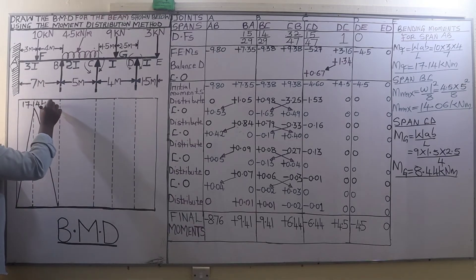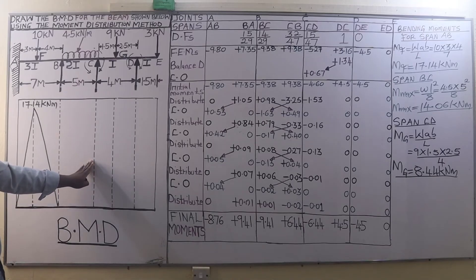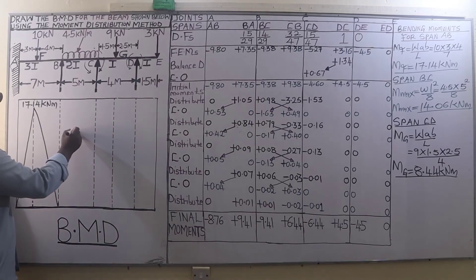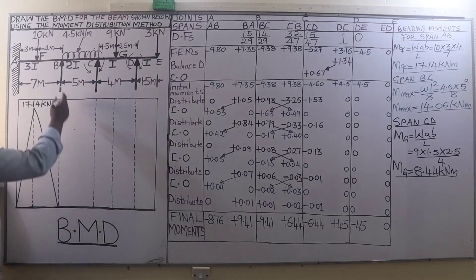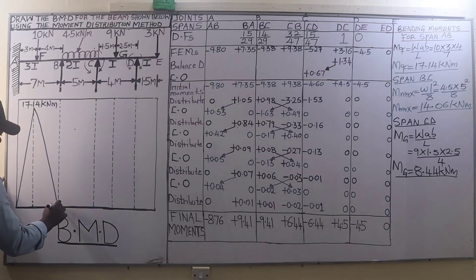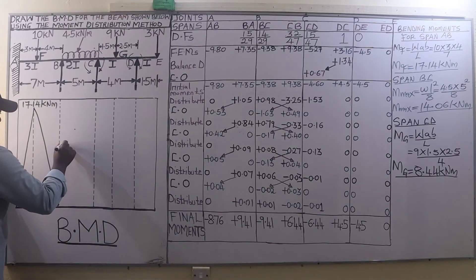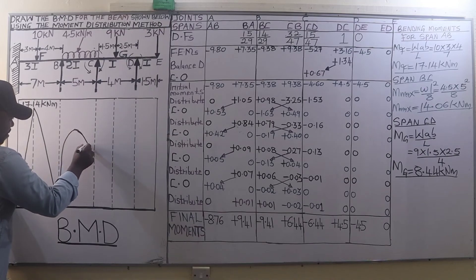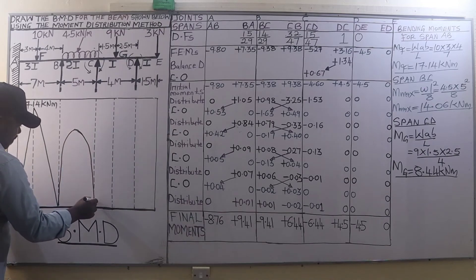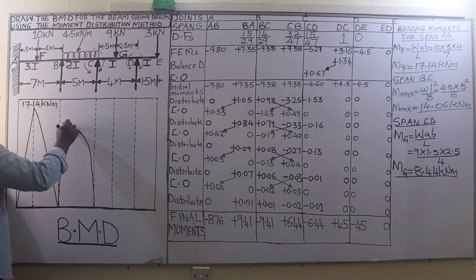For span BC the maximum bending moment is 14.06. Since span BC is loaded with a UDL, this will be a smooth curve. The value plotted is 14.06 kilo-newton-metres.